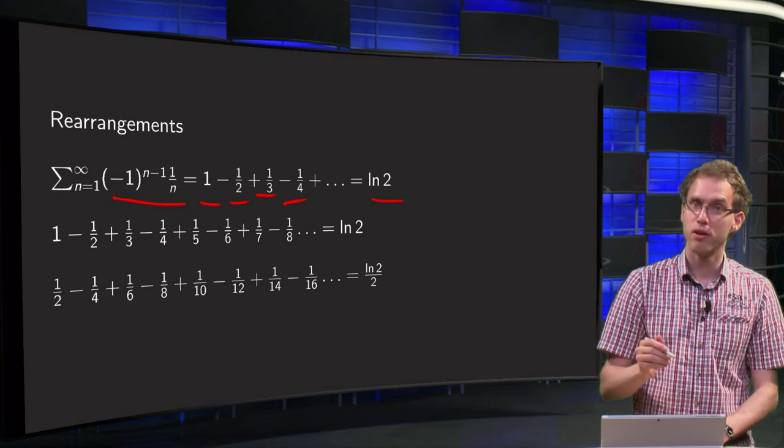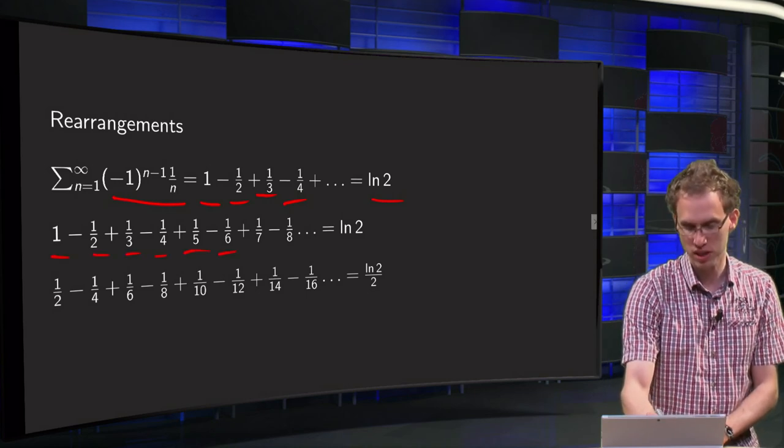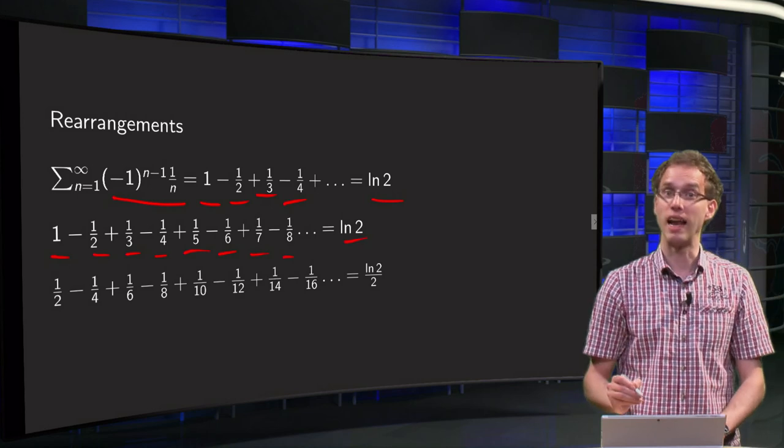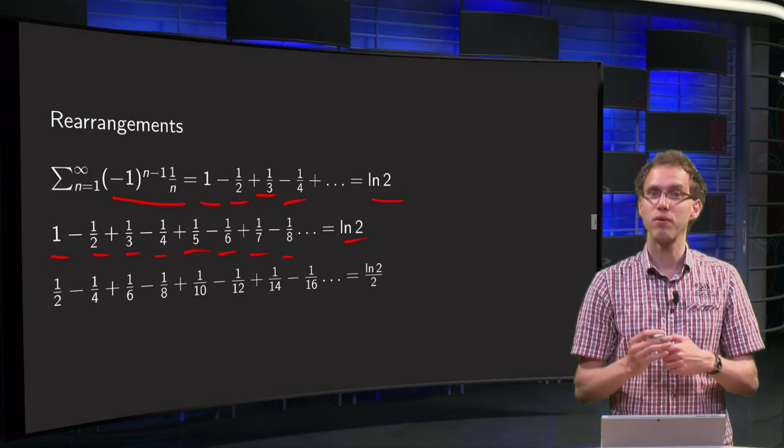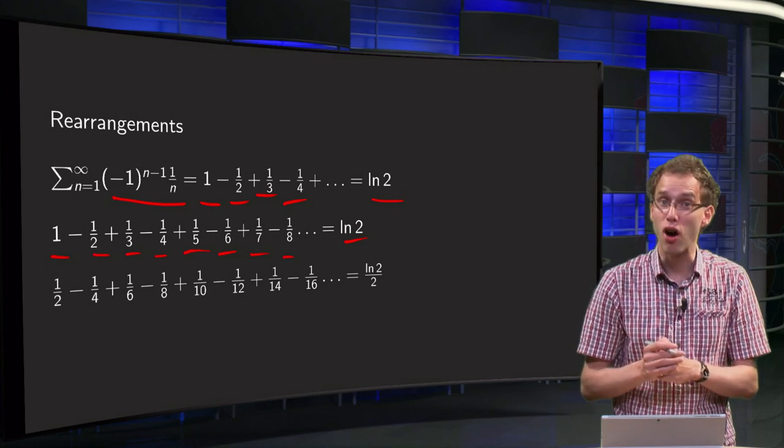Let's write down a few more terms. So 1 - 1/2 + 1/3 - 1/4, etc., equals ln 2. And then we are going to do a few manipulations. First of all we are going to take one half of this series.